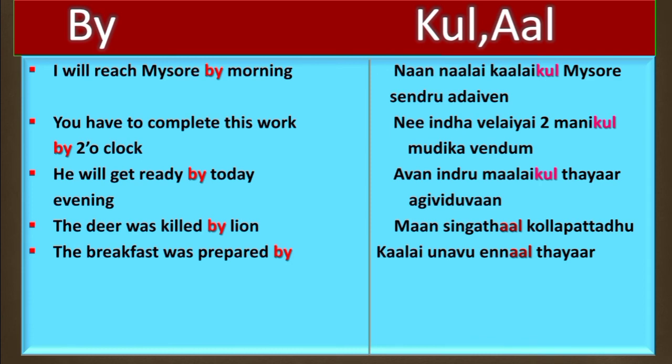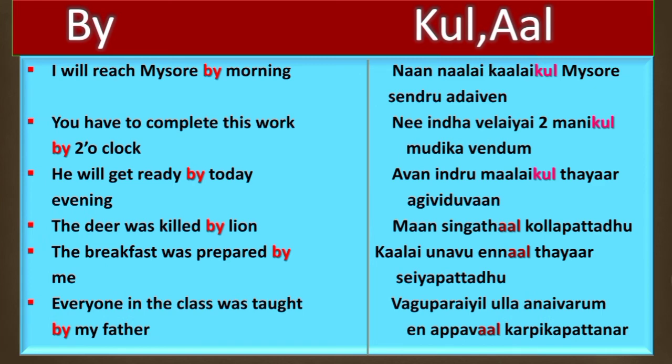The fifth example is: 'The breakfast was prepared by me.' In Tamil: Kaalai unavu ennal thayar sayyapattadu. We are using 'ennal' here. The sixth example is: 'Everyone in the class was taught by my father.' In Tamil: Vaguparayil ullla aneivarum enn appavall karpikka pattadu. Vaguparayil ullla aneivarum means 'everyone in the class', enn appavall means 'by my father', and karpikka pattadu means 'was taught'.